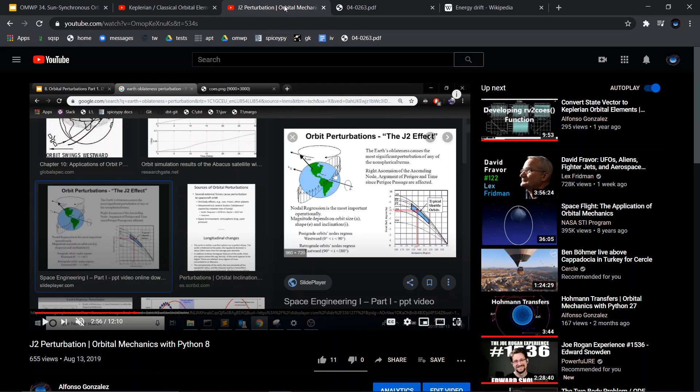The J2 perturbation is the perturbation due to the fact that the Earth is an oblate spheroid, which means that because the Earth is rotating, the equatorial radius is larger than the polar radius, which means it's not a sphere, which means that the center of gravity is not the geometric center of the Earth, which causes a perturbation.